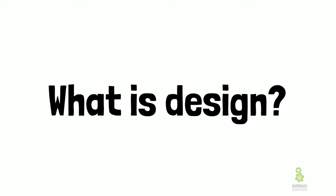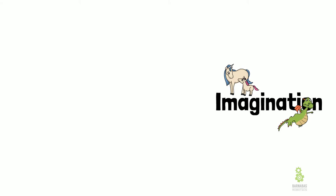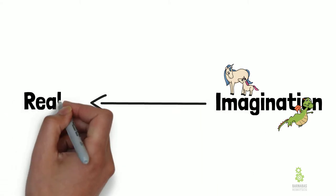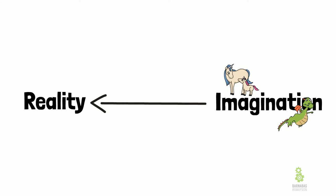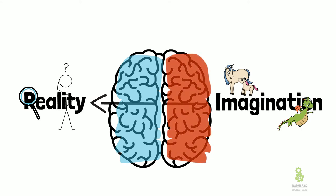So what is design and what does it have to do with our brain? Well, quite simply, design is taking something from our imagination — that would be our right brain — and bringing that imagination into reality. And the way that we do that is by looking at things and wondering, asking questions like, how do they work? So the question is, which side of the brain do we use for design? Is it the left side or is it the right side? Well, actually, we need both.